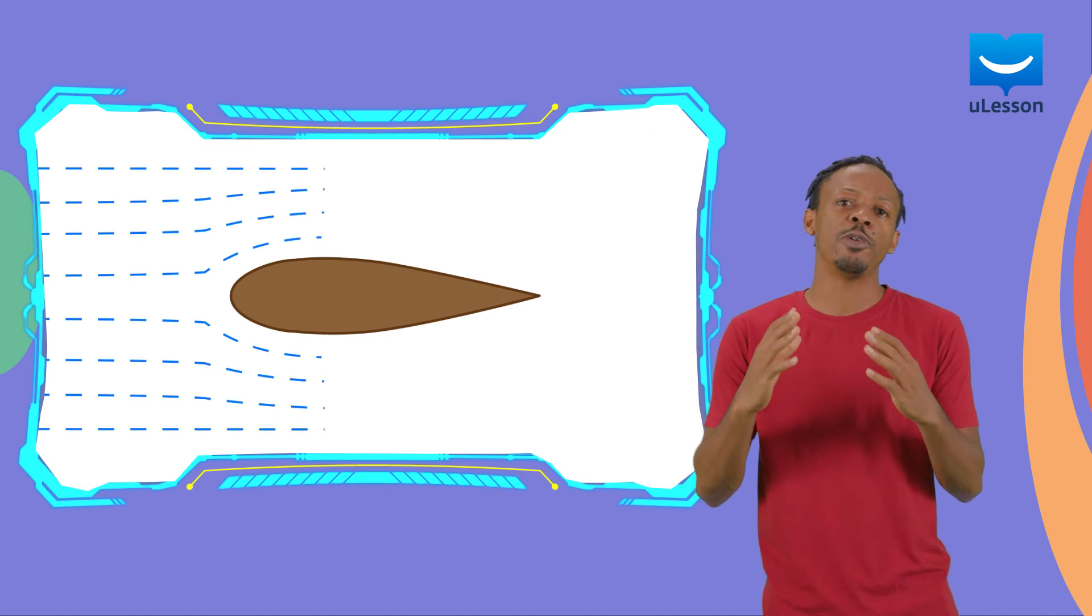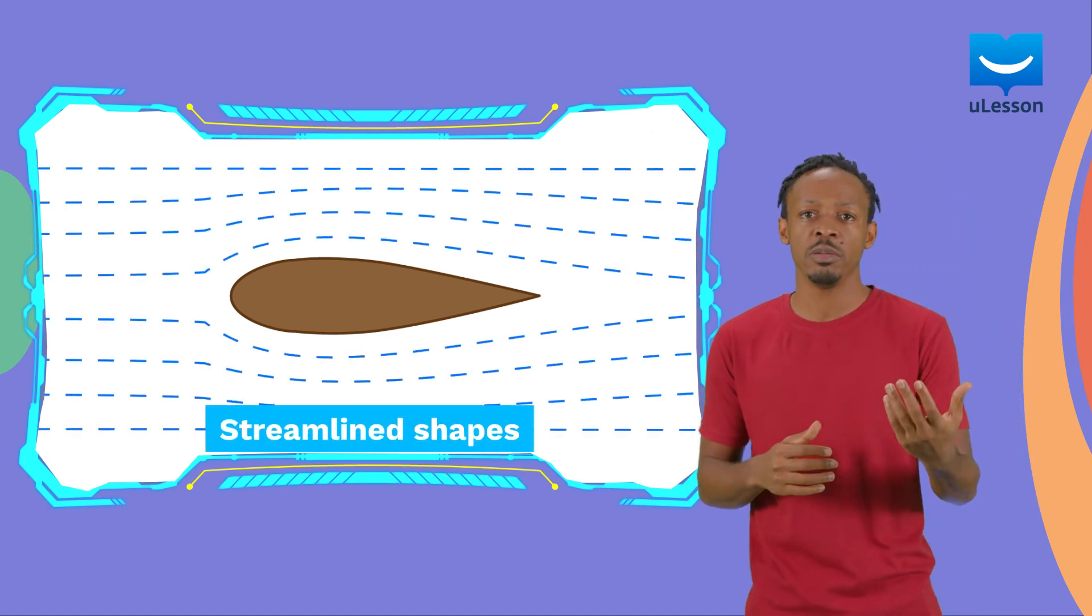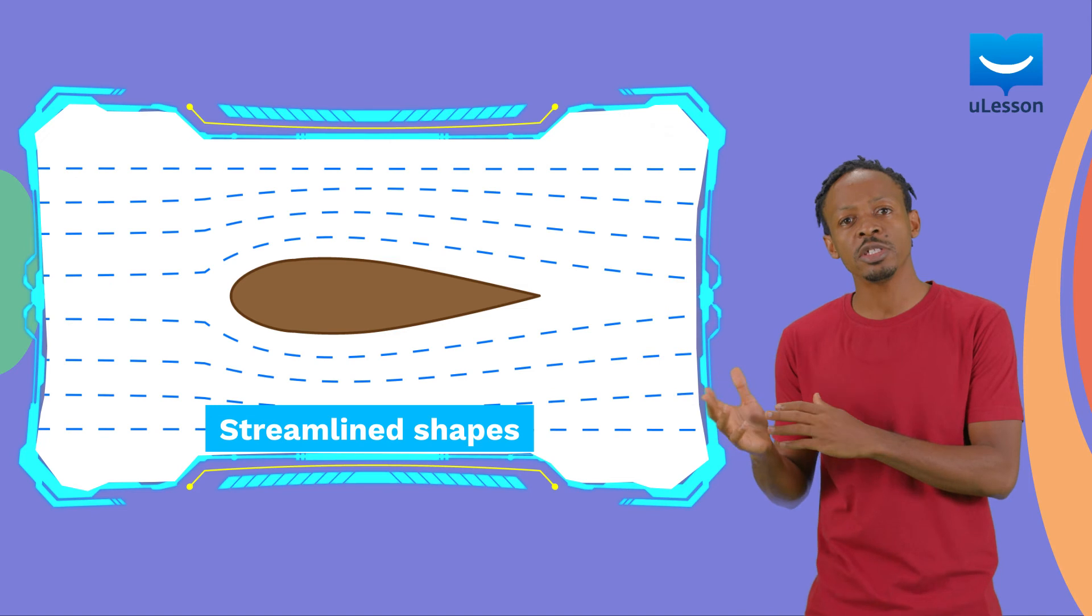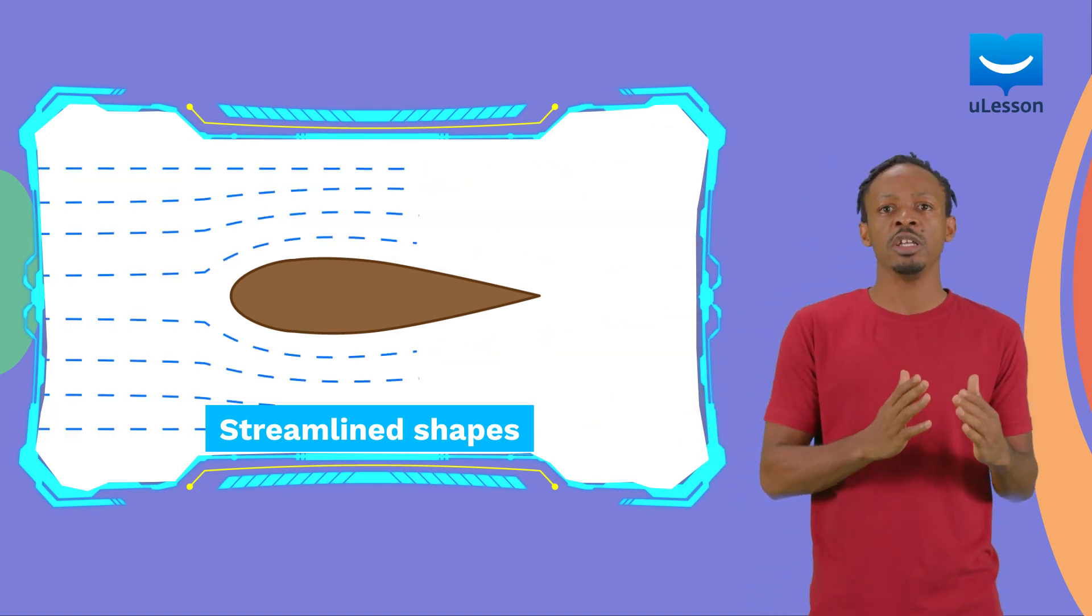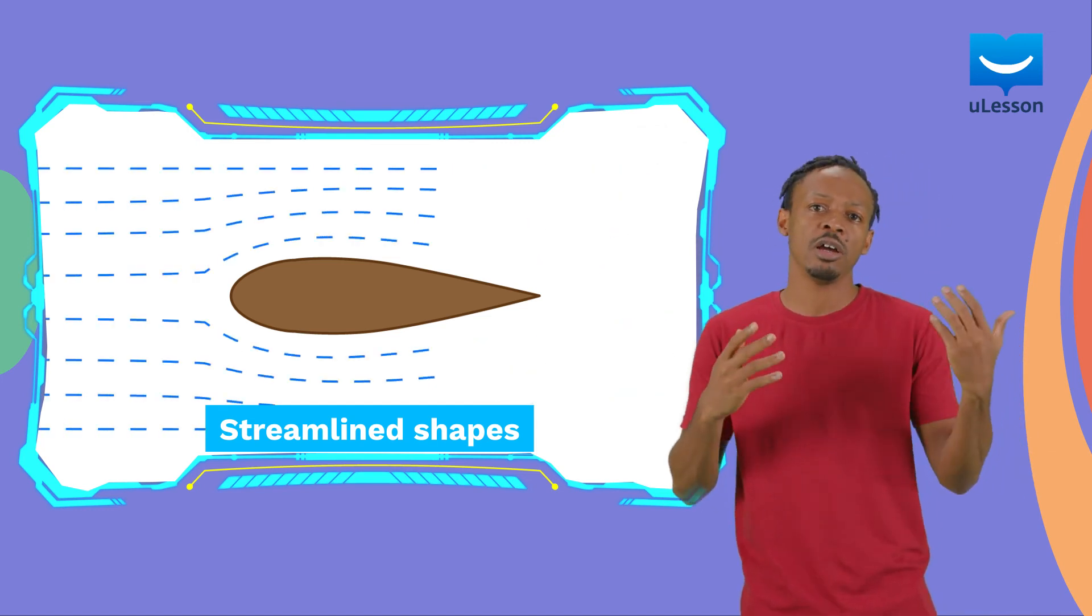Shapes that cause very little turbulence are referred to as streamlined shapes. In the front, they cut through the fluid and at the back, the shape transitions gradually so that very few eddies are created.